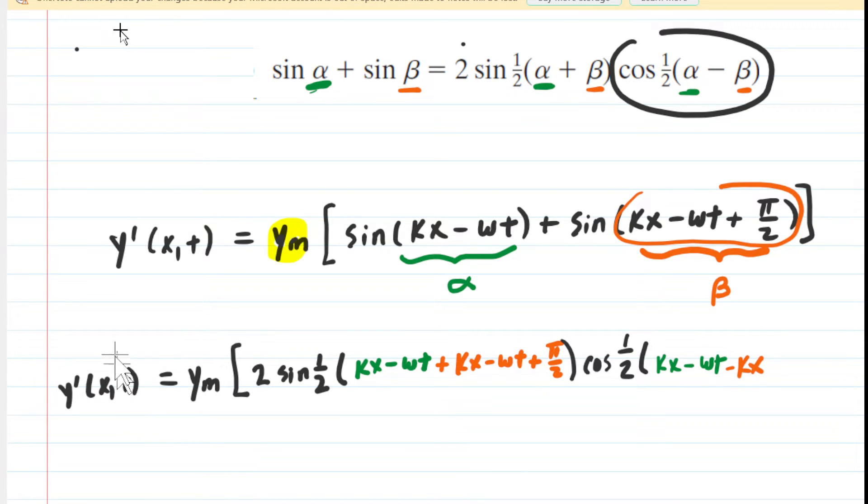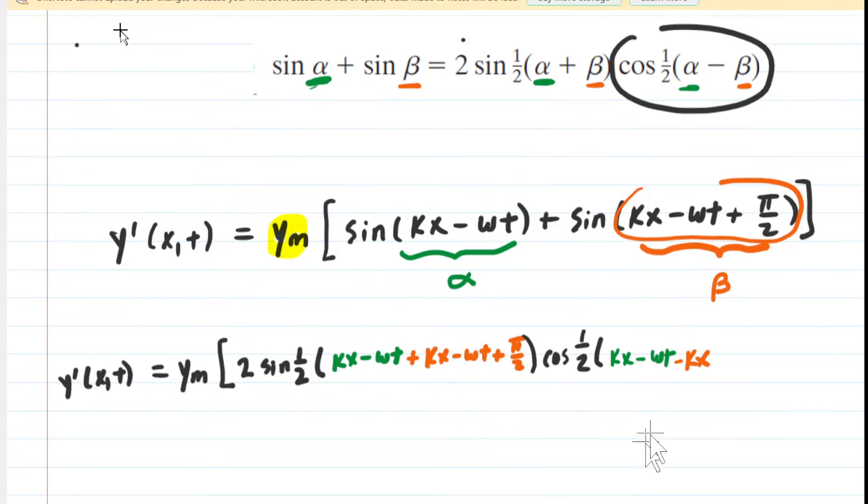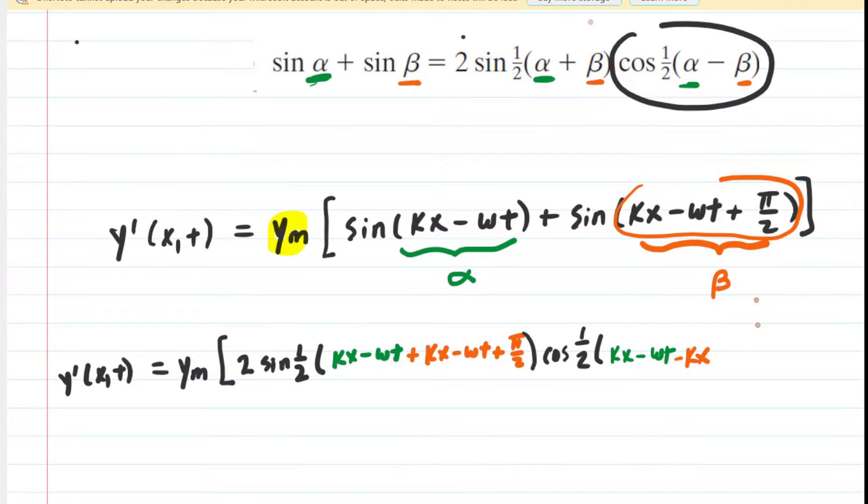We're going to have minus kx. We're going to need to shrink this down because we're running out of room. So minus kx, distribute the negative sign, that becomes plus ωt and then minus π/2, just like that.